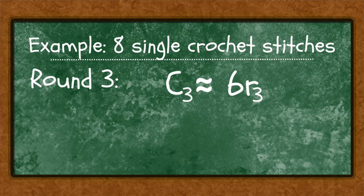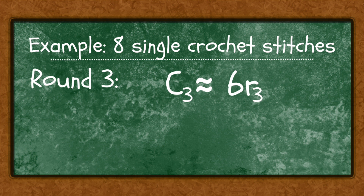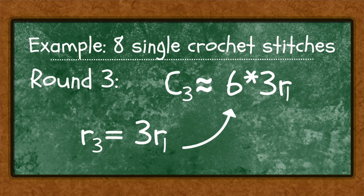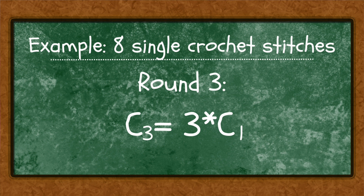The same idea applies with round three. The circumference of round three equals six times the radius of round three. When we work three rounds the radius is the height of three stitches, so the radius of round three is three times the radius of round one. Plugging in: circumference of round three equals six times three times the radius of round one, which equals three times the circumference of round one. So round three has three times as many stitches as round one.